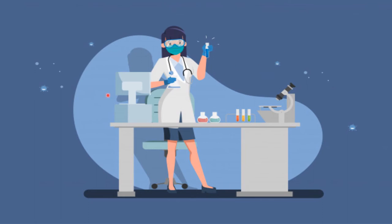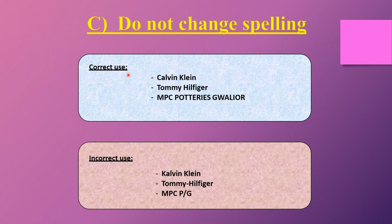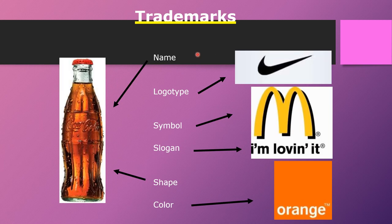Application of trademark: a trademark is a sign used on or in connection with the marketing of goods or services. Used on the goods means it may appear not only on the goods themselves but on the container, air, or wrapper in which the goods are sold. The word's specific font, size, proportion, and placement also have to be considered. Correct and incorrect uses of font size, proportion, and placement are illustrated. Even the spelling cannot be changed — for example, the correct spelling of 'Kevin' versus incorrect variants. Trademarks can include names like Coca-Cola, logo symbols, slogans like McDonald's, even the shape of the bottle, as well as color.